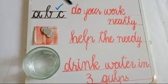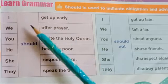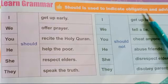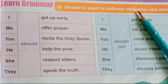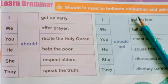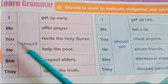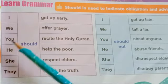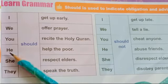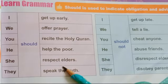Now let's have a look at 'Learn Grammar from the Book.' As you can see, 'should' is used to indicate obligation and advice — obligation means our duties. For example: I should get up early. We should offer prayer. You should recite the Holy Quran. He should help the poor. She should respect elders. They should speak the truth. It's very easy, students.